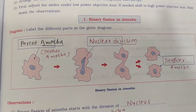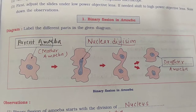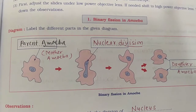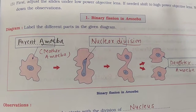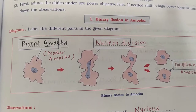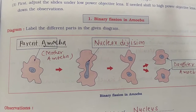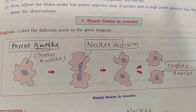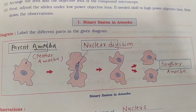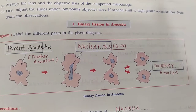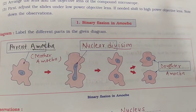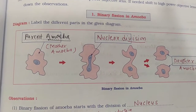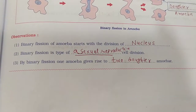The diagram shows binary fission in amoeba. Look at the diagram. First, it shows the parent amoeba, then nuclear division occurs, and finally there are two daughter amoeba. This is binary fission in amoeba.